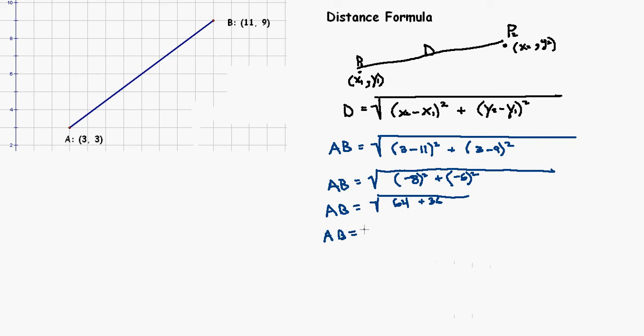Now remember, the square root is really asking you a question: what number multiplied by itself will equal 100? What times itself equals 100? The answer to that is 10. So the length from A to B is 10 units long.